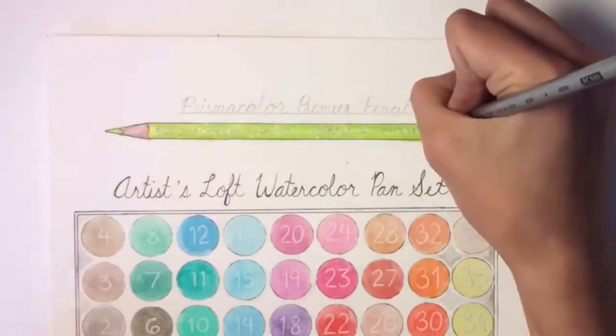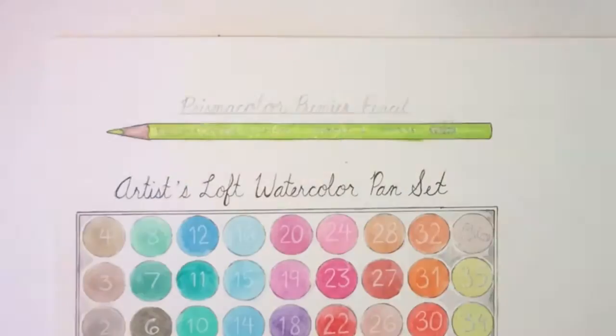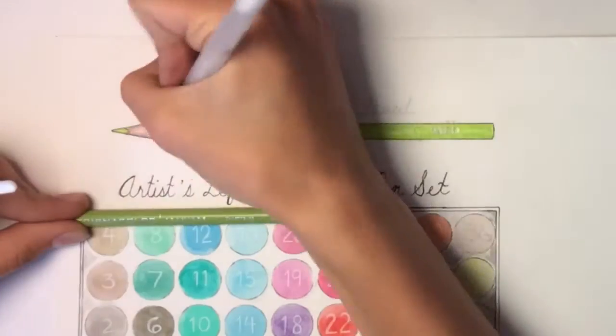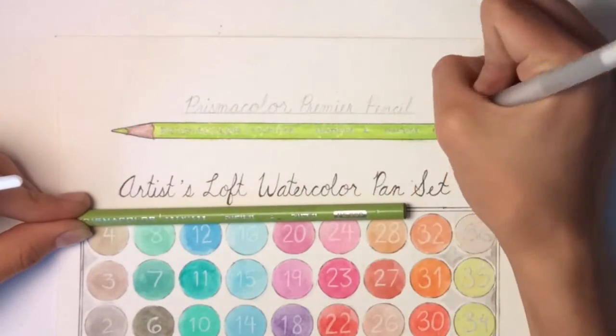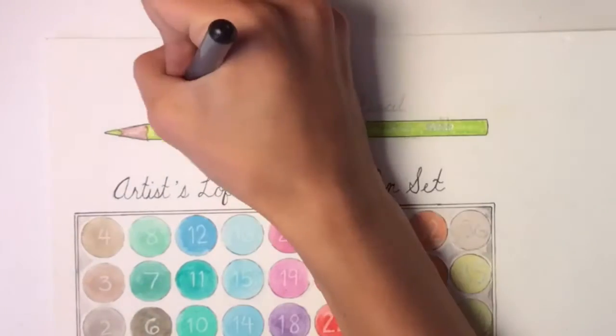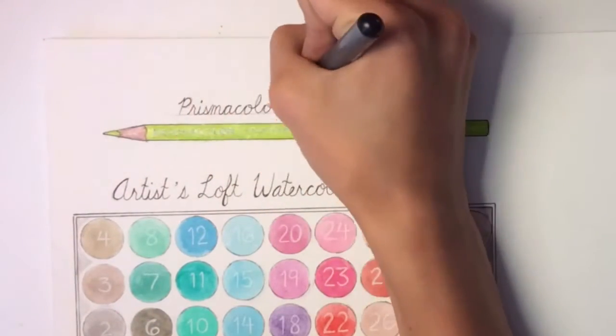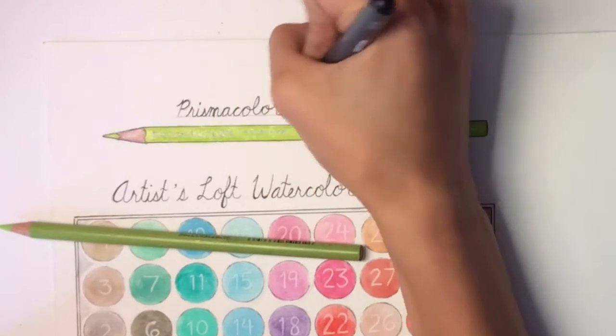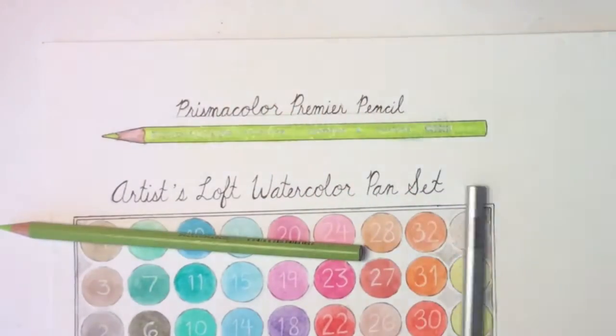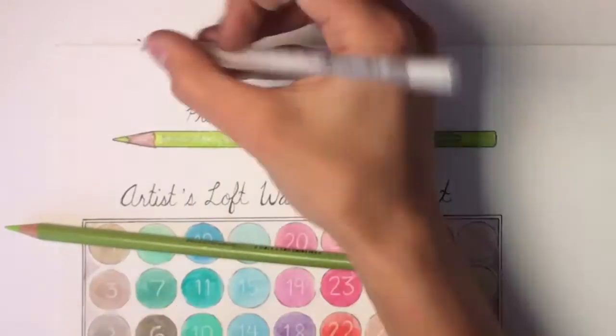So why do I like these? They're very buttery. Like they go on the paper very smoothly. And they're so easy to blend with each other. I mean, I just can't get over the color. The colors for these pencils are always so rich and beautiful. And they are my favorite pencils over like definitely, they're definitely my favorite pencils.